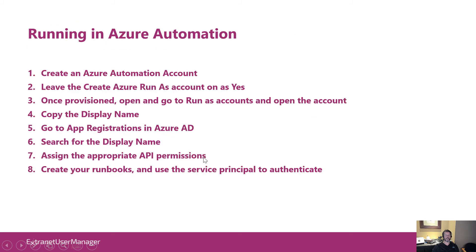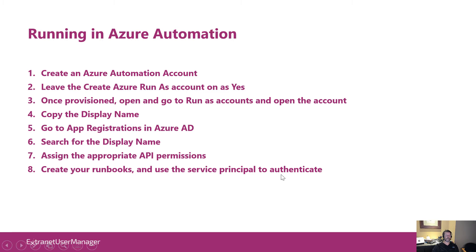Under the hood in Azure Automation: when you create an Azure Automation account, by default there's an option to create a run-as account — leave that turned on. It actually registers an application in Azure AD. You can see that account, get its display name, look in app registrations in Azure AD and search for it, assign it permissions. When creating your runbooks, you use that service principal — the client ID and certificate thumbprint — to authenticate to the applications.